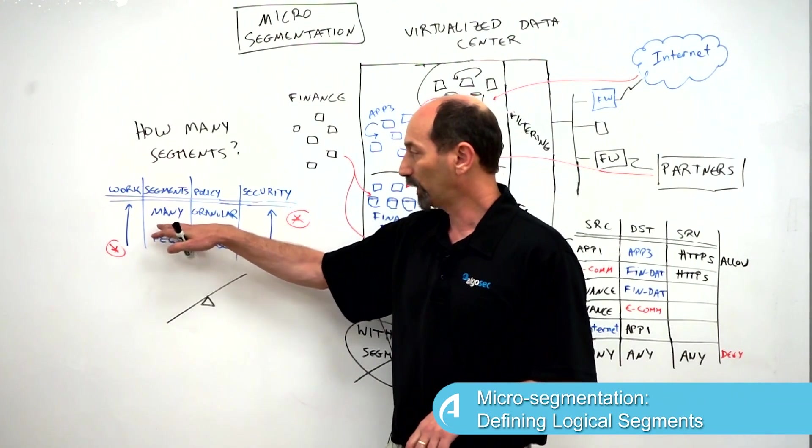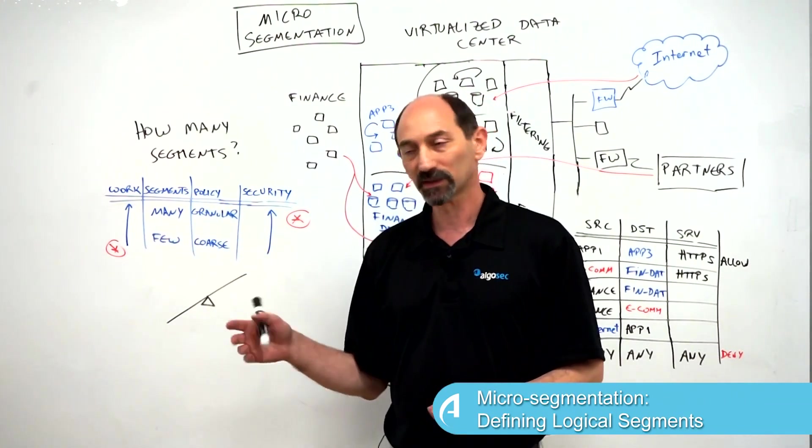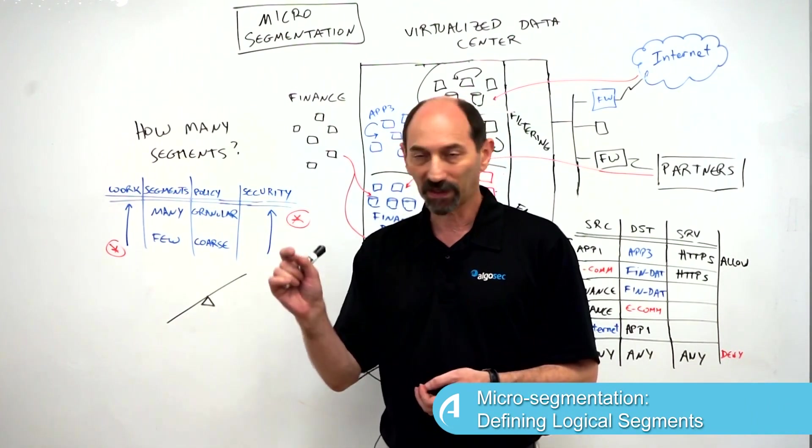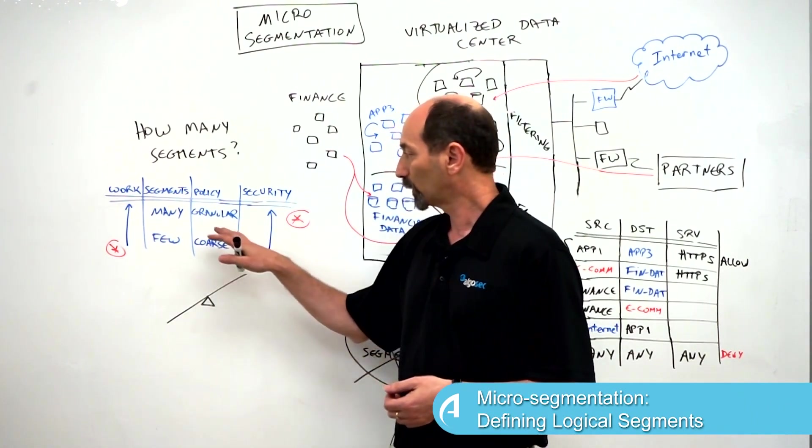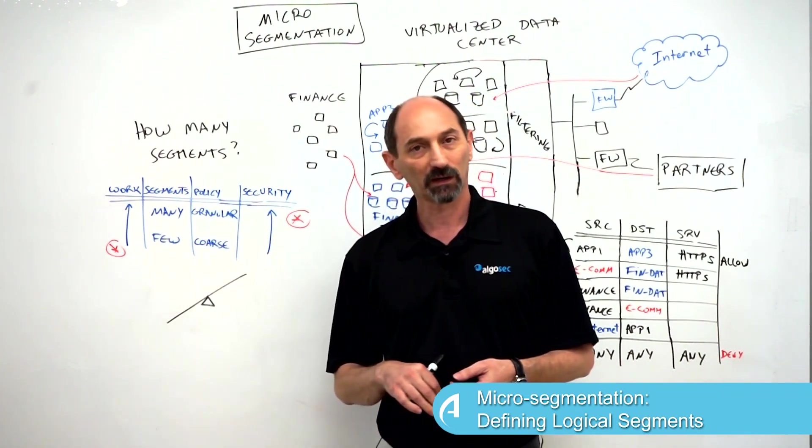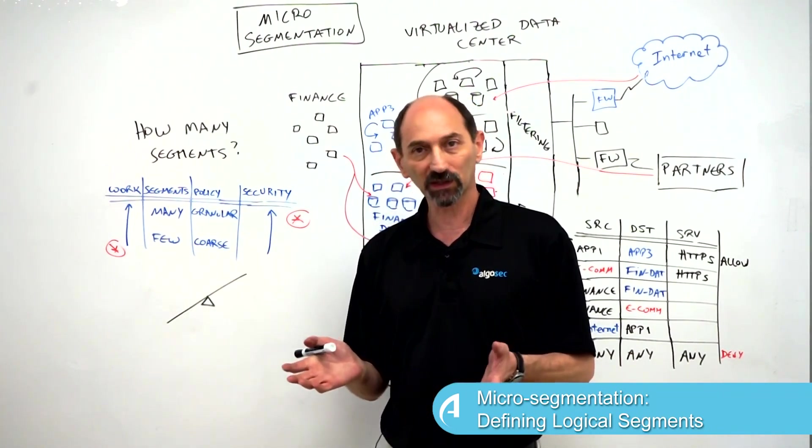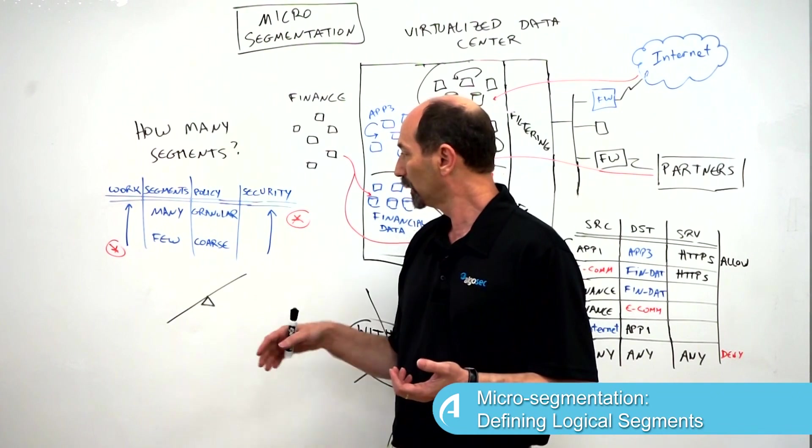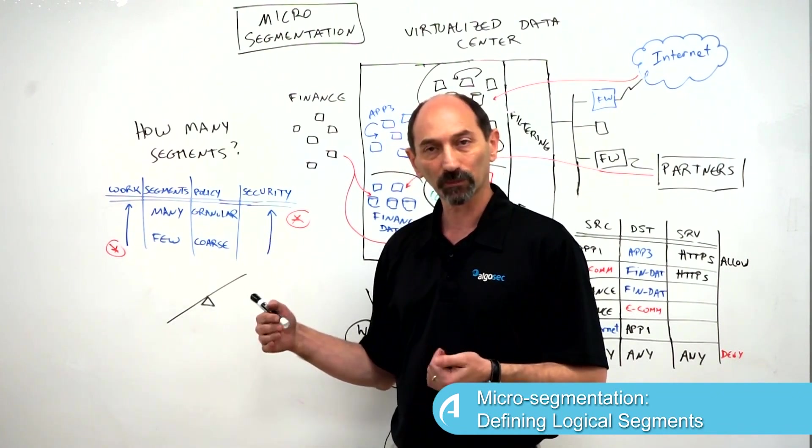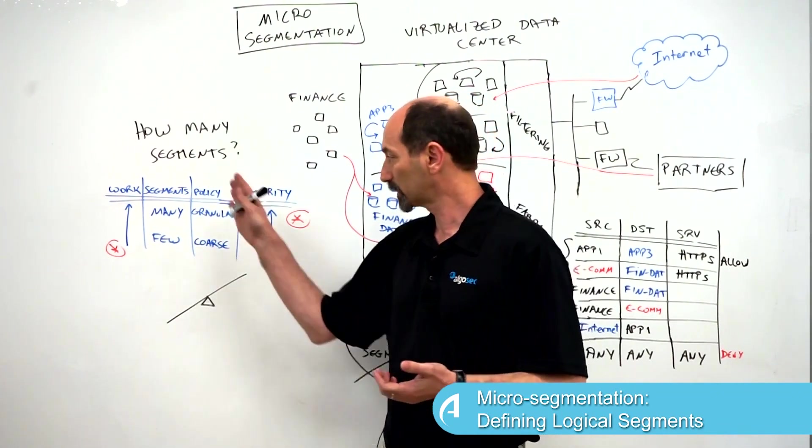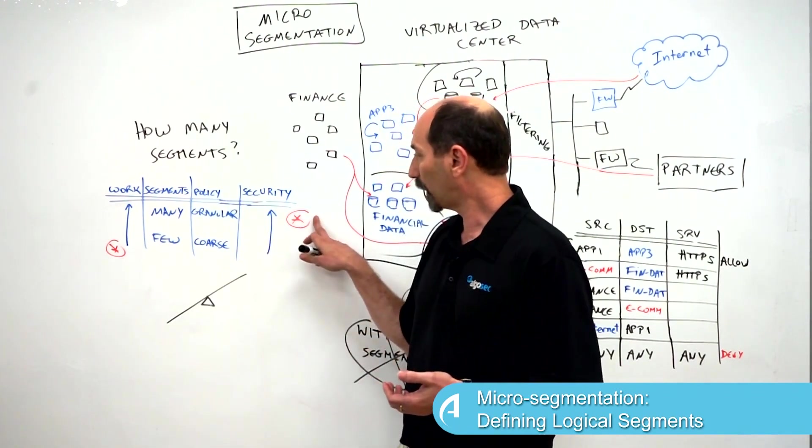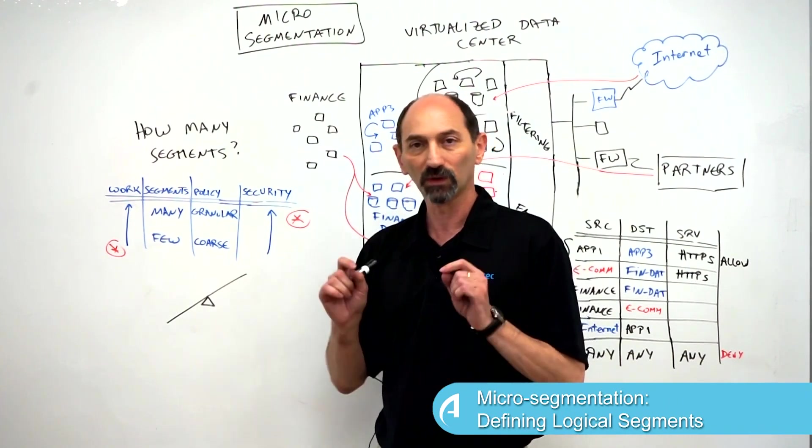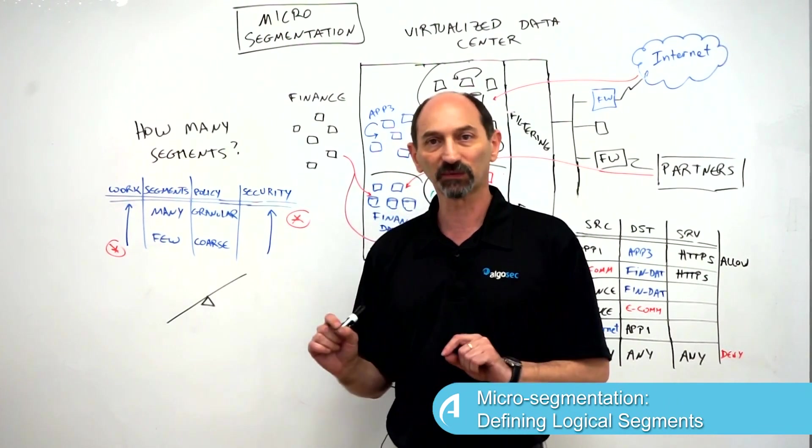If we go with a very large number of segments then we can write very granular filtering rules that control access to one or two or three servers, whereas if we have a coarse segmentation we can only write coarse rules that refer to big chunks of the data center homogeneously and we have lesser control. In terms of where we want to be on this picture, we want to be up here in terms of security. We want to be able to write very granular policy, we want to control flows very specifically, so it's advantageous to have many different segments.